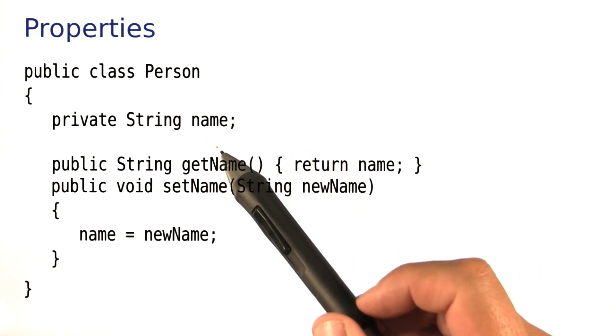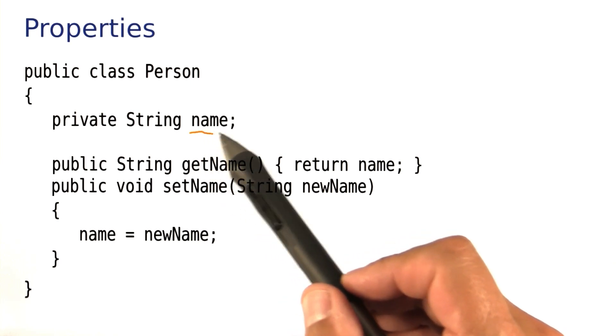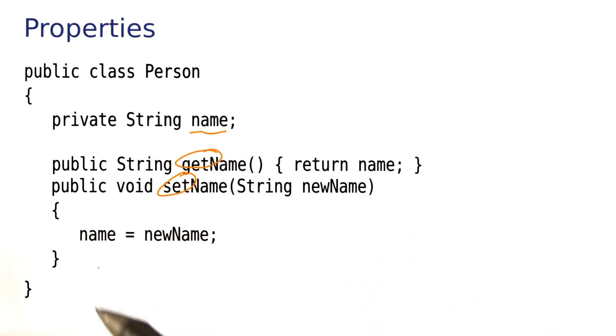It's very common to have this pattern: instance variable, getter, setter.